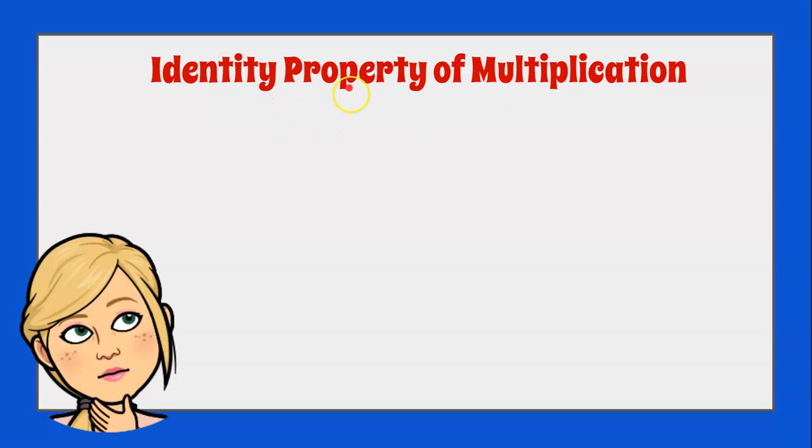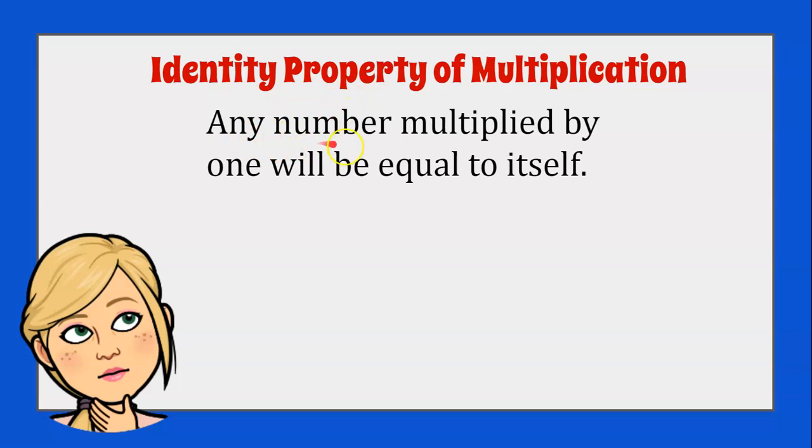The identity property of multiplication says that any number multiplied by 1 will be equal to itself. So any number n multiplied by 1 equals that number. Let's use a number: 4 times 1 equals 4. So whenever you see a 1, you know the other number is the product.